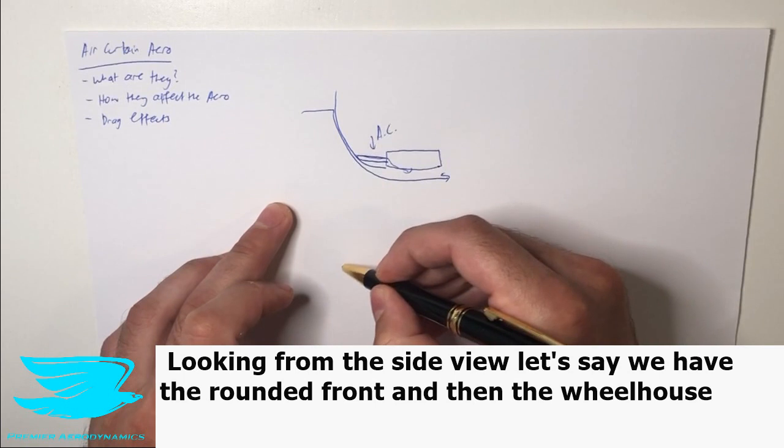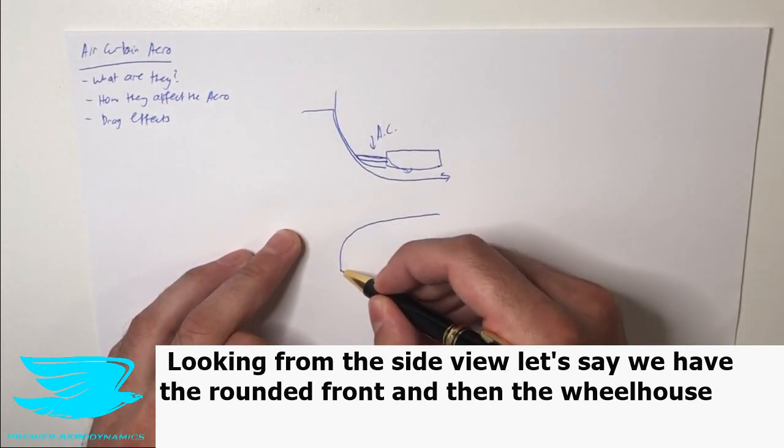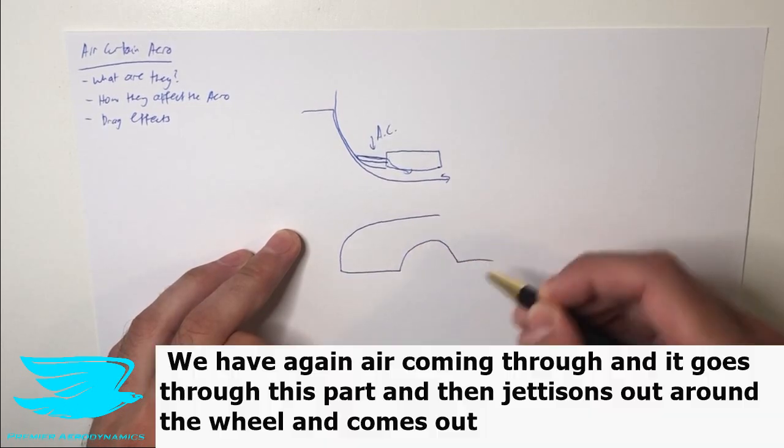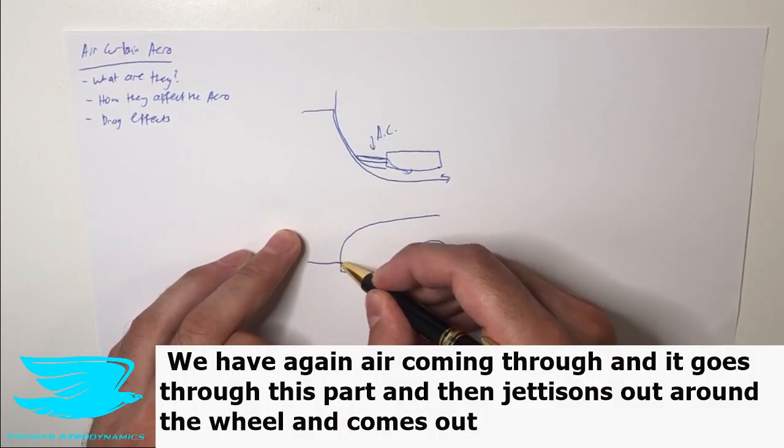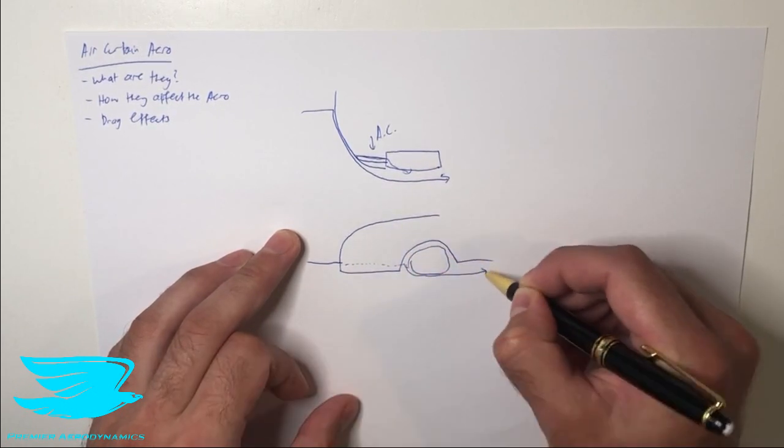And looking from the side view, let's say we have the rounded front and then the wheelhouse. We have, again, air coming through, and it goes through this part and then jettisons out around the wheel and comes out.